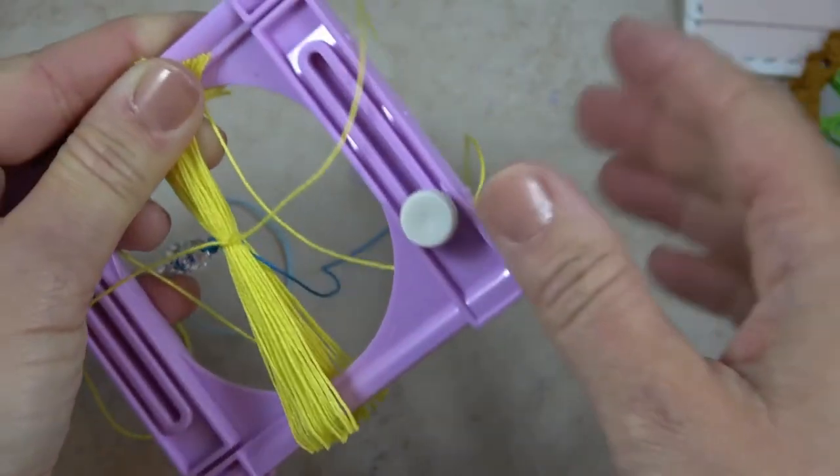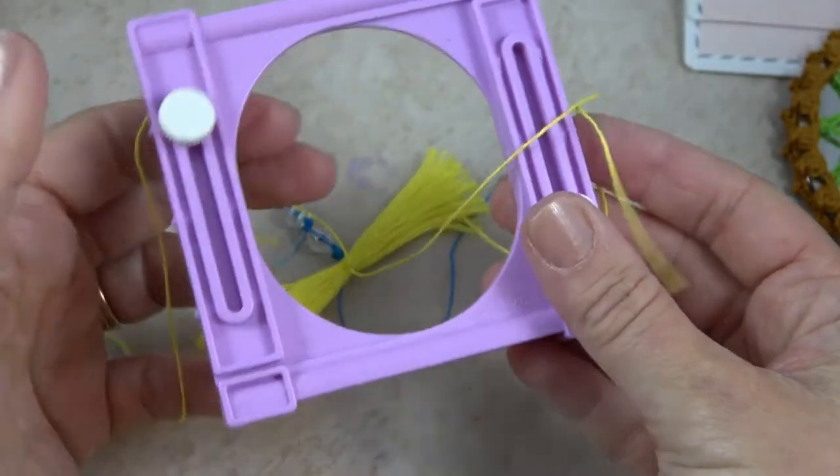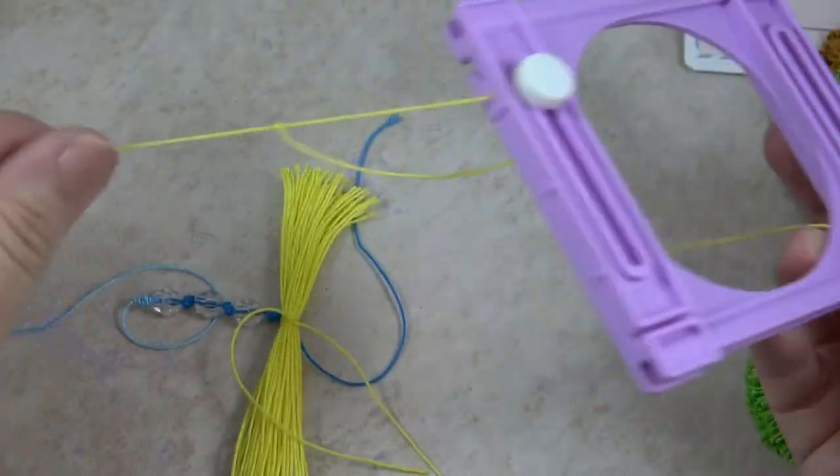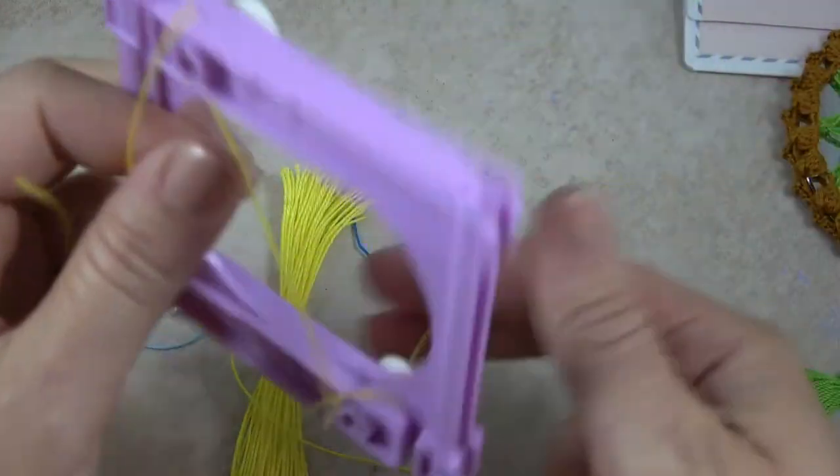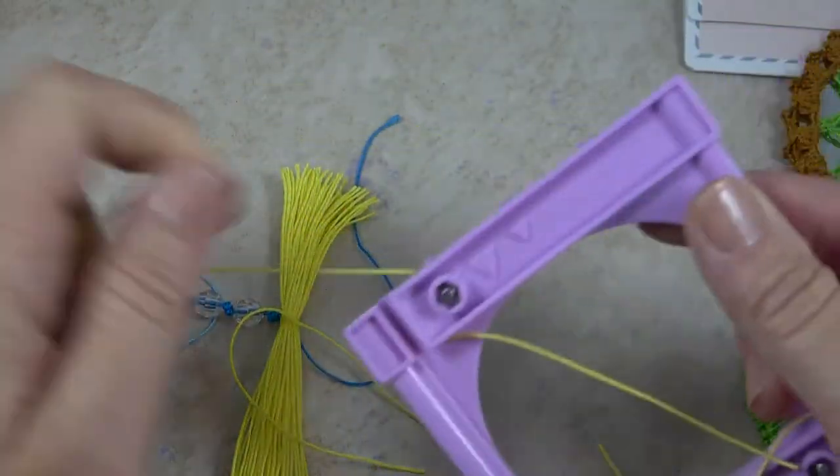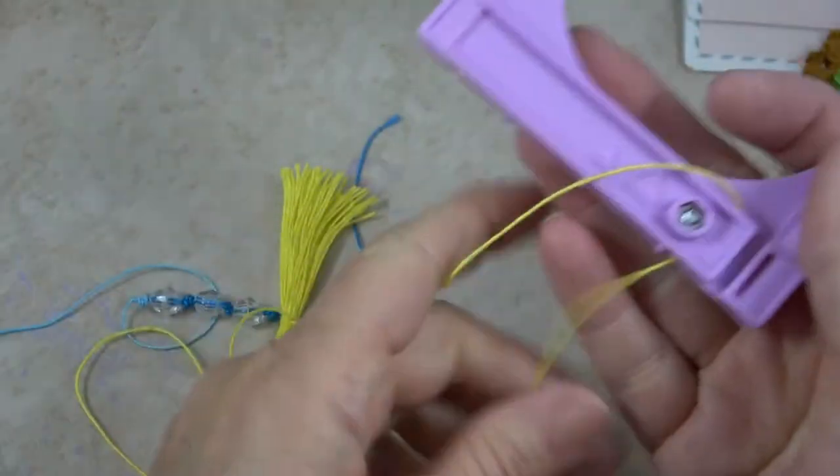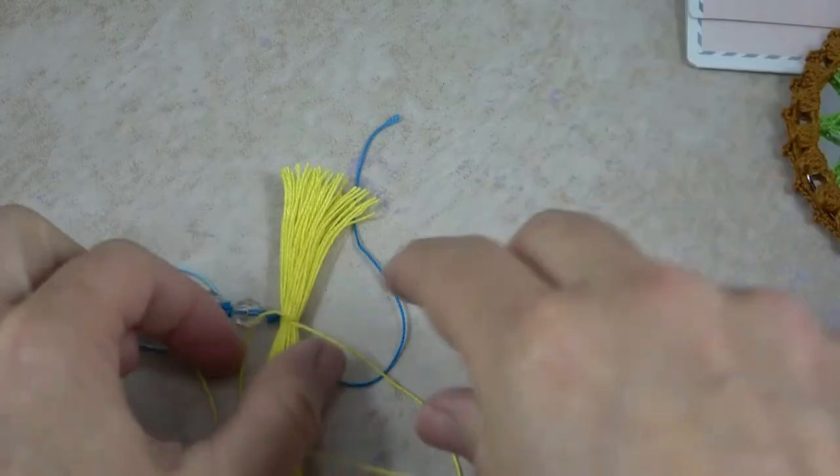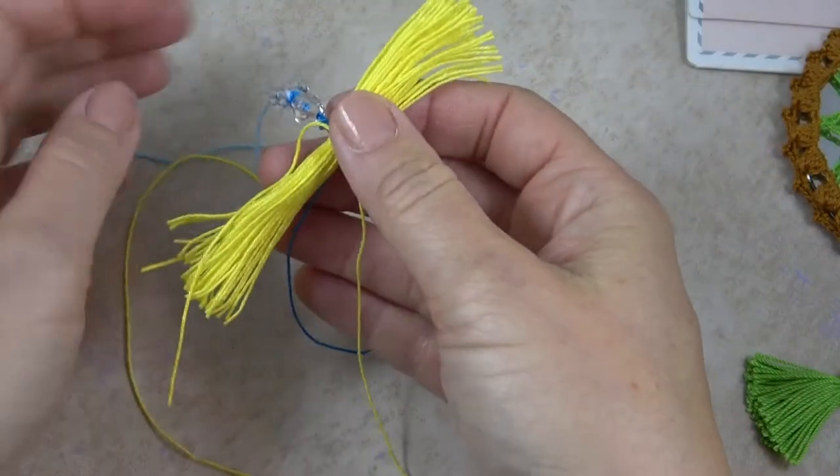Alright, there we go. Now it all falls off of the gadget and I, remember I cut this thread extra long so I'm going to take that off and I'll be using it to tie up the tassel in a minute.